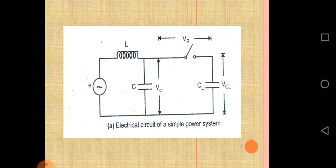E is the source, L is inductance, C is capacitance, Vr is the voltage across the switch, Vcl is the voltage across the capacitor, and Cl shows the capacitance. This is a simple circuit already studied in network analysis and basic power systems.